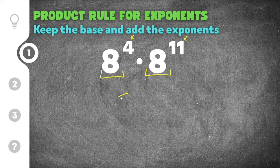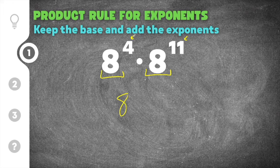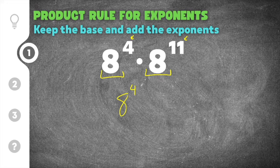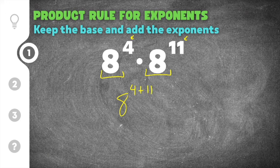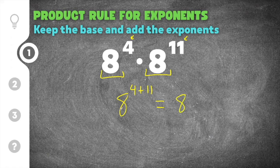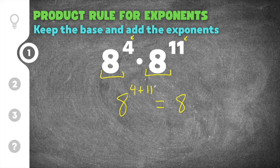So I can take our base of eight and write here, and I know the first exponent is four and it's going to be added to the second exponent which is the eleven. When we simplify this, we'll keep the base the same and then we're just going to add four plus eleven.